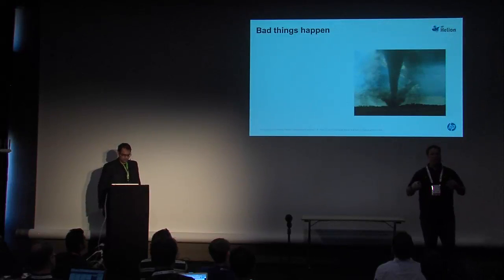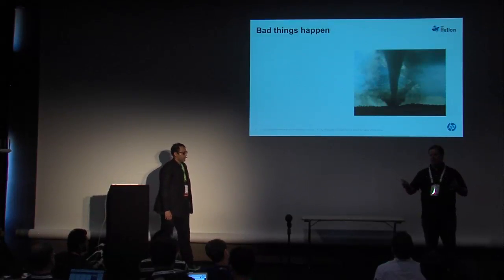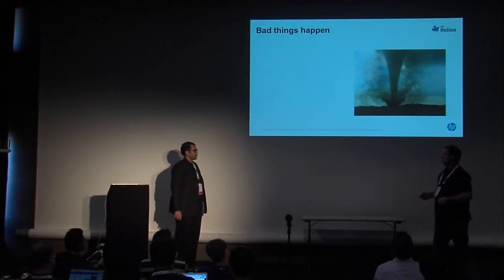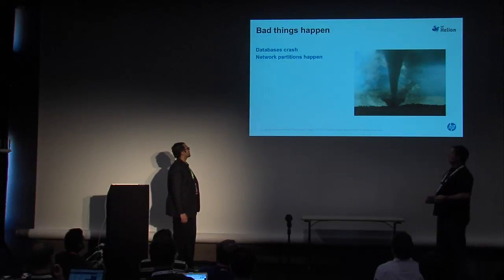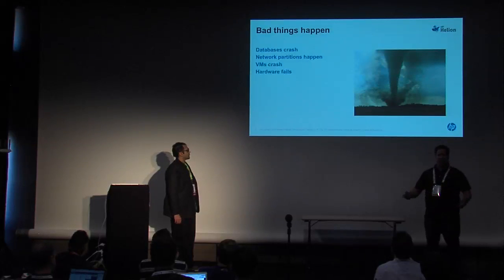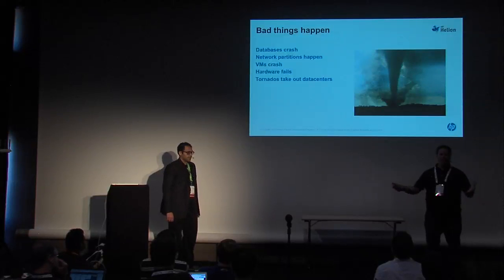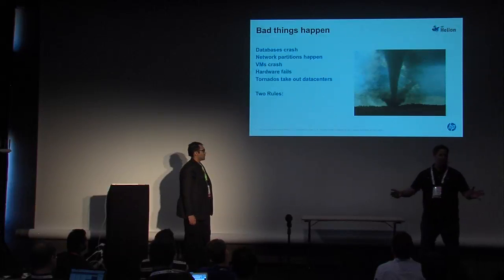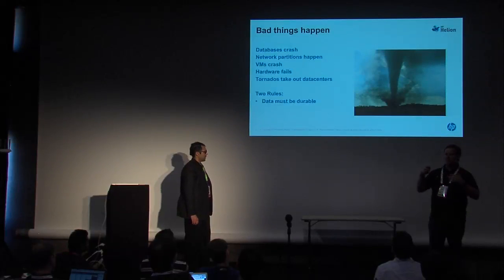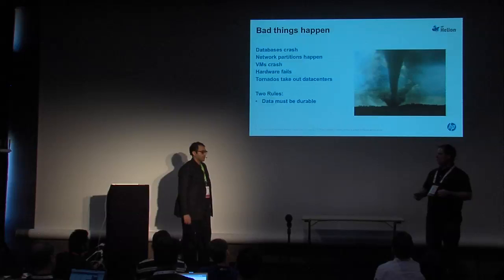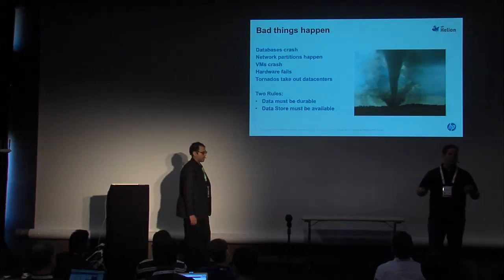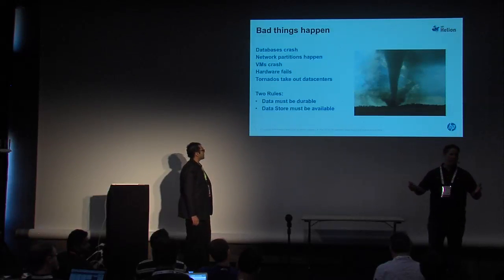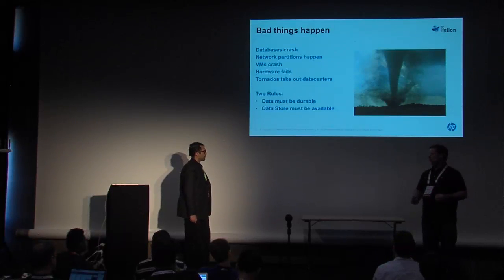Bad things happen all the time. In the database world specifically, databases crash, network partitions happen, VMs crash, hardware fails — occasionally a tornado may hit your data center. Two rules about databases: data is always durable — the data must survive everything — and the data store must always be available. Availability and durability are the two keys in Trove and in most database services, including what we're shipping with HP Helion.